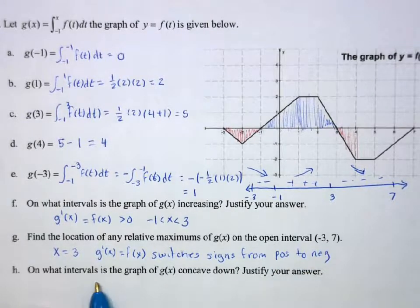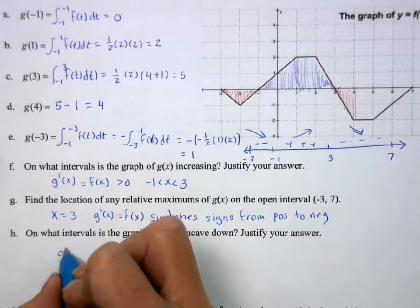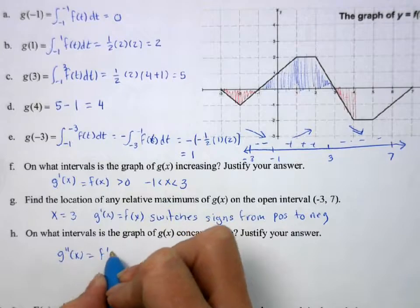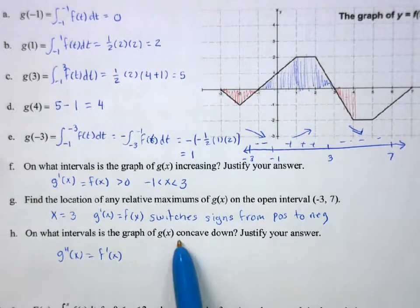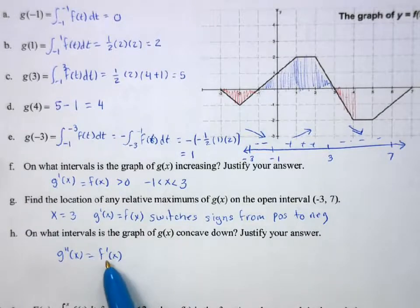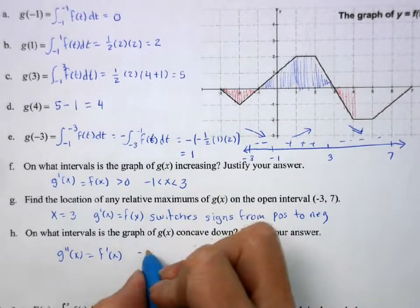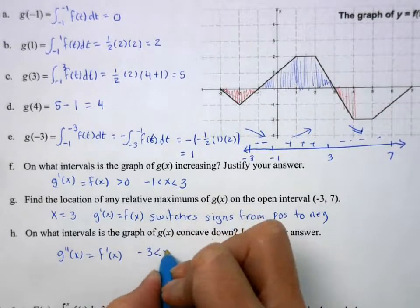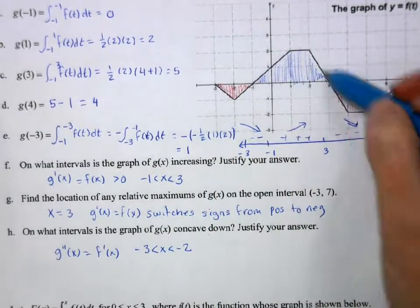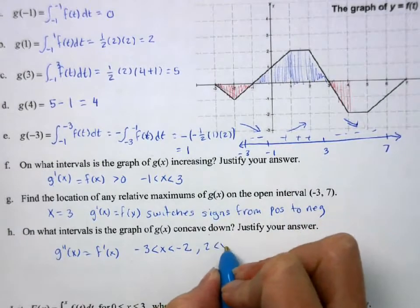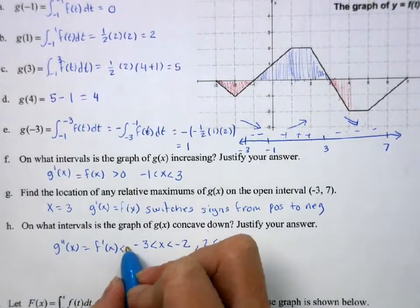There's a relative maximum at x equals 3 because g prime of x, which equals f of x, switches signs from positive to negative. For concavity, the second derivative is the first derivative of f — we look at the slopes. Where slopes are negative, g is concave down: from negative 3 to negative 2, then from 2 to 4. Justification: g double prime is less than 0.